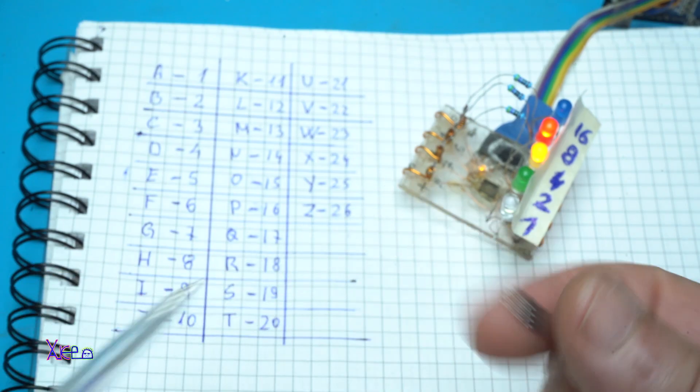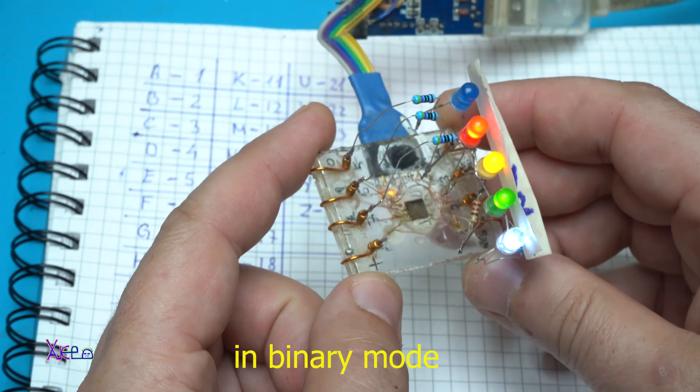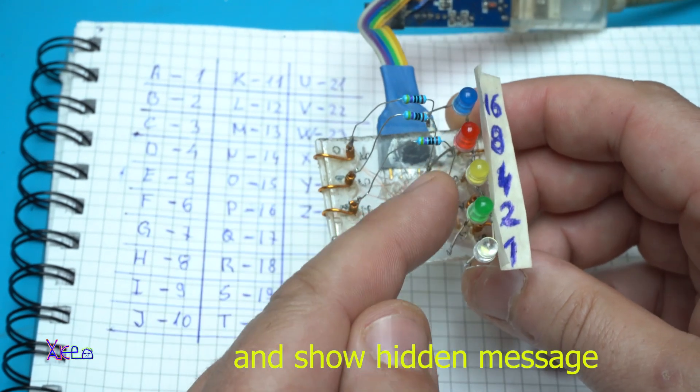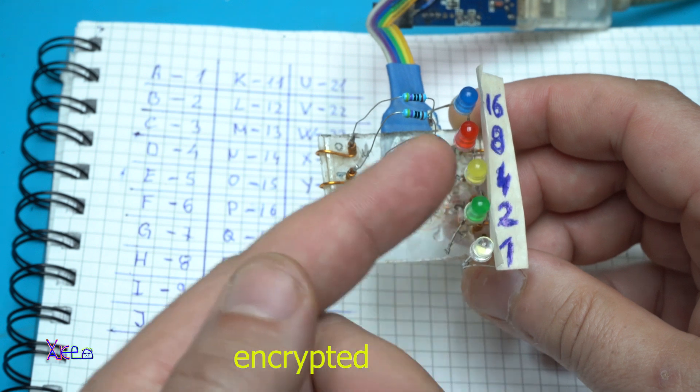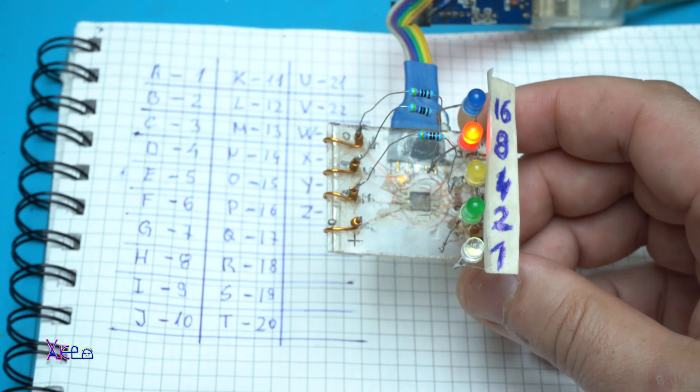Using this tiny microchip, I made a gadget that works in binary mode and shows a hidden message encrypted that only you can read. Let's start today's video.